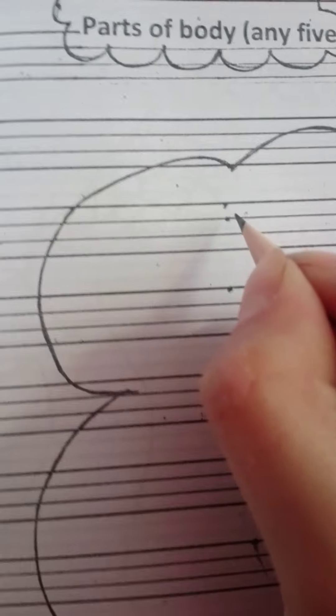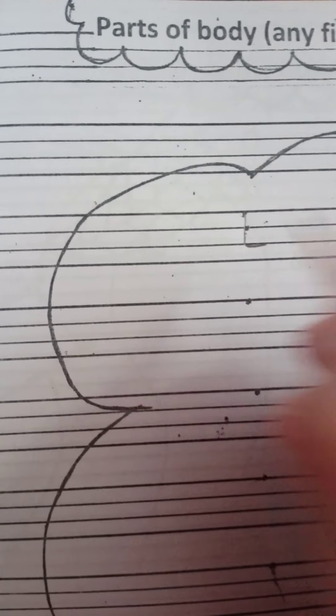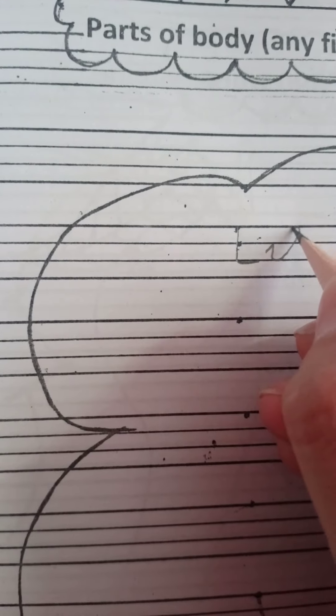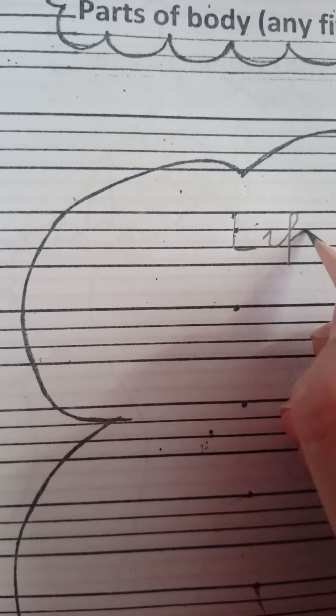We can write parts of body and the dots are mentioned. First we can write letter L, I, P: lip.